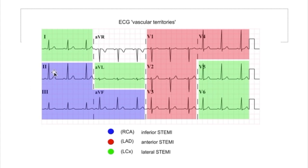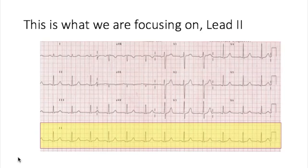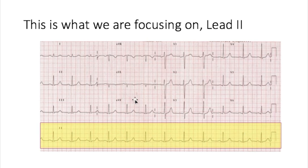The blue box leads — leads two, three, and augmented vector foot — are looking at the inferior part of the heart. If there are changes consistent in these leads with what you see on lead two, they would classify it as an inferior ST elevated myocardial infarction. Lead two gives the overall picture, while leads two, three, and augmented vector foot together identify that the actual area of insult is the inferior heart.